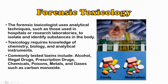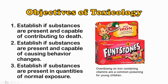A young child may not be able to tell the difference between some of these things — I can barely tell the difference myself. What are the objectives of toxicology? One is to establish if substances are present and capable of contributing to death — is it there, and is there enough to cause death? Two is to establish if substances are present and capable of causing behavior changes — is something in the body, and is that enough to make someone intoxicated, for example?